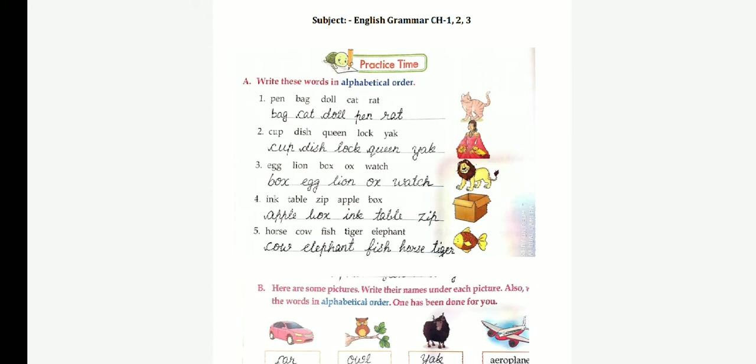First one: pen, bag, doll, cat and rat. Here 5 words are given. Which word will come first? Bag. Next word, cat. Then, doll, pen and rat. Here, the word beginning with B comes before the word beginning with C.